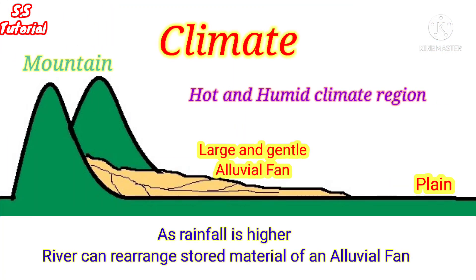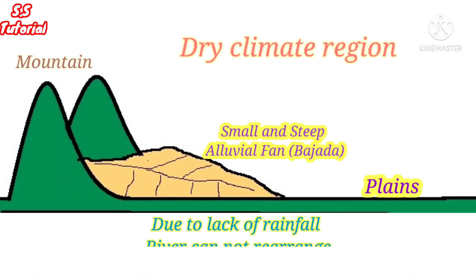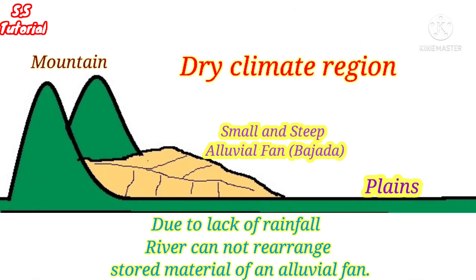First, climate. In hot and humid regions where rainfall is much higher, it is possible to rearrange the stored sediment of the alluvial plane, and the alluvial plane has the opportunity to expand. As larger material deposits quickly and smaller material deposits slowly, slope decreases along the length of the alluvial fan. But in dry climatic regions where heavy rainfall occurs in a short time, river water cannot reorganize the stored material of the alluvial plane. As a result, the river is not able to decrease the gradient of the alluvial fan, so the alluvial fan remains steep.